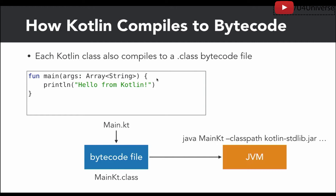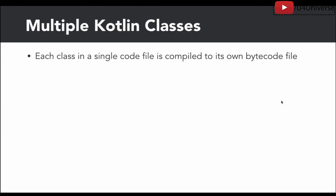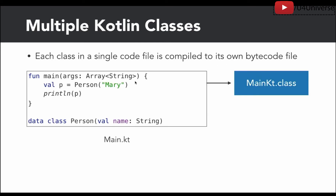Kotlin runtime libraries can be used as a standard library. We can use Kotlin as a standard library alongside the bytecode. Next, if we look at multiple Kotlin classes: each class in a single code file is compiled to its own bytecode file. Unlike Java, Kotlin compiled classes will produce multiple class files.